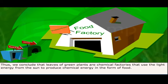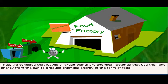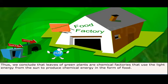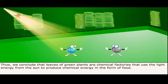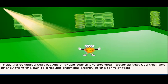Thus, we conclude that leaves of green plants are chemical factories that use the light energy from the sun to produce chemical energy in the form of food.